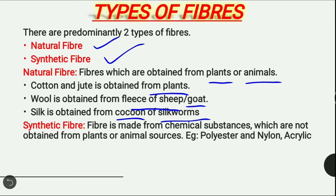Synthetic fiber is made from chemical substances which are not obtained from plants or animal sources. Examples of synthetic fibers include polyester, nylon, and acrylic.